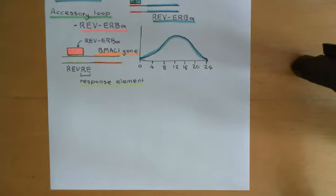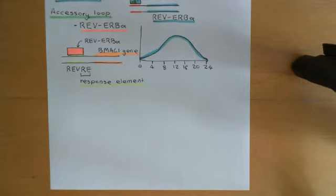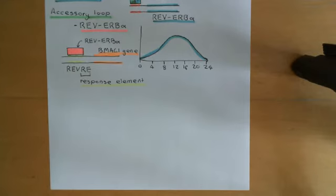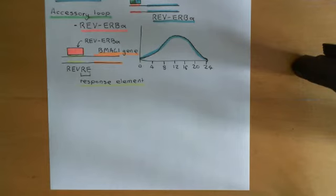Their circadian cycles will all be out of sync with each other. Their graphs will not all be peaking at midday and troughing at midnight — some might be peaking at 9am and troughing at 9pm. So something in the mammalian body is keeping all of the peripheral cells' circadian clocks in time with one another, and also in time with the light-dark cycle. That is what we now want to study.